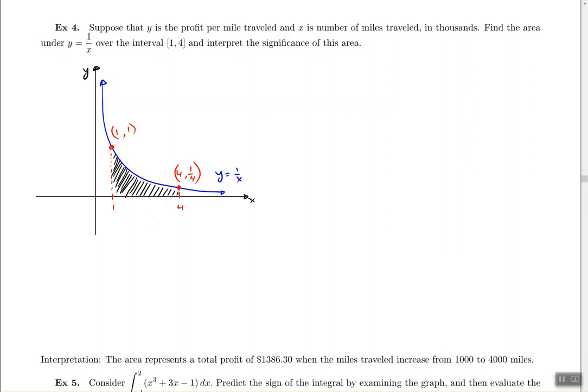And how do we find areas underneath curves? At first, we had to do it with Riemann sums. But now we have a new method called the definite integral. In this case, the area is going to be the integral going from 1 to 4 because those numbers were the lower bound and the upper bound. The expression is 1 over x dx.